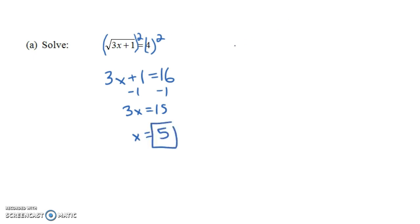It's always a good idea to check your answer. Is it really the case that the square root of 3 times 5 plus 1 is equal to 4? So we plugged in 5 for X. Yeah, because the square root of 16 really is 4. So that worked.